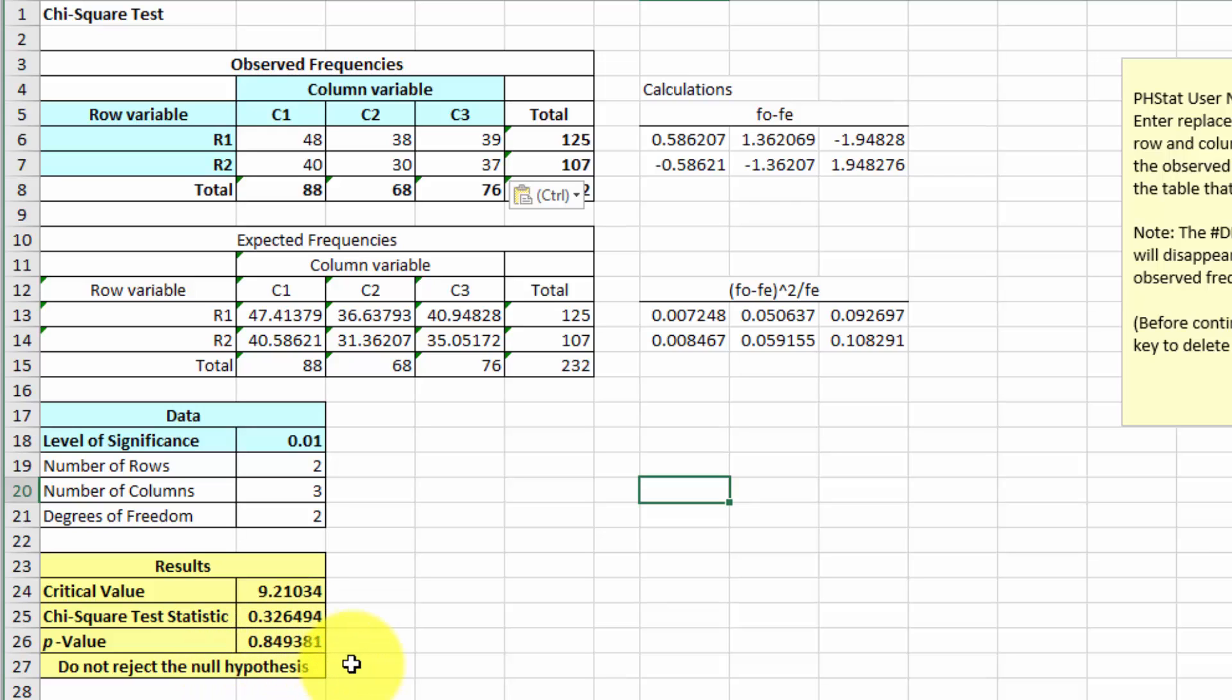The p-value tells us it's not significant. And also the fact that the chi-square test statistic is not beyond, not greater than the critical value. That also tells us that we do not reject the null hypothesis.